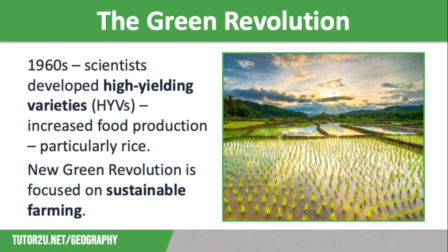The obvious pro of the green revolution is it increases yield and some crops can better withstand drought. Today, the focus is on sustainable farming, such as conserving biodiversity, preserving drought-resistant strains and crop-wild relatives, as well as protecting soil and water sources and the well-being of local communities. However, some of the new techniques involved are expensive.